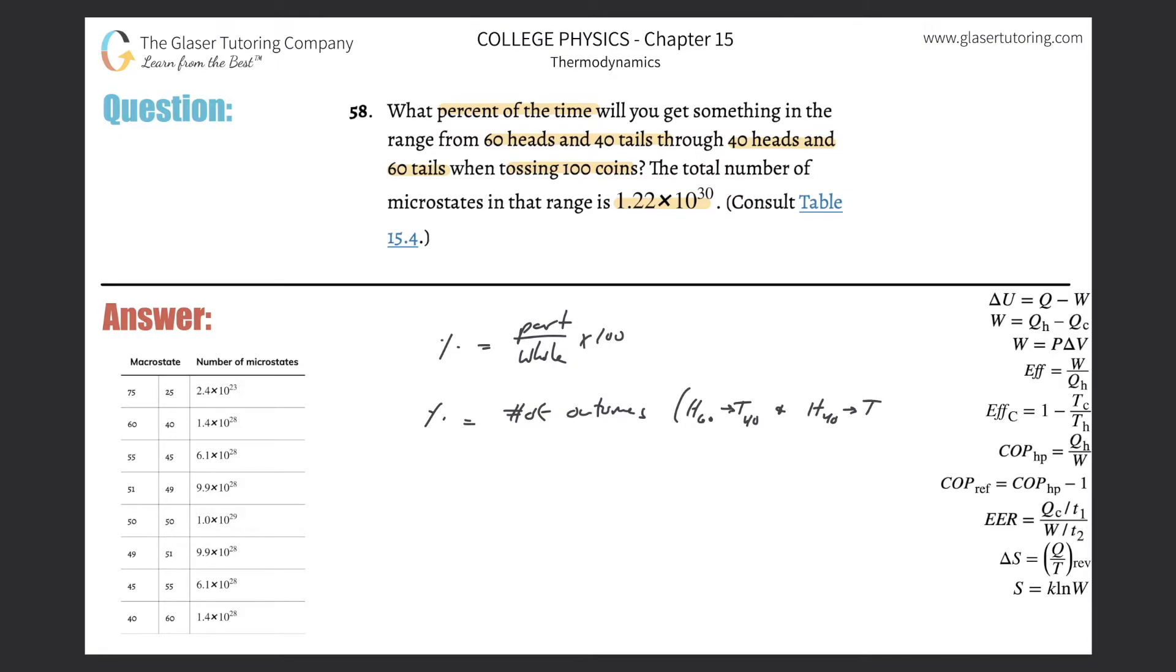In other words, we can just think of this as finding the head count going from 60 all the way down to 40. That's probably a little easier. And as the heads go down, the number of tails go up.